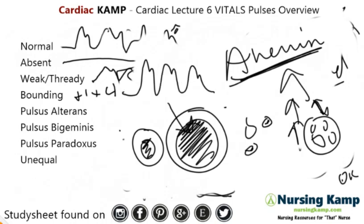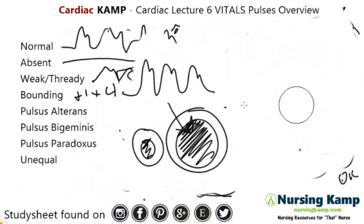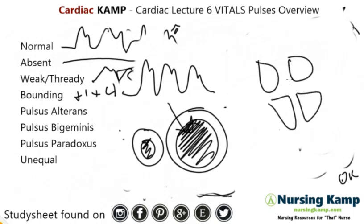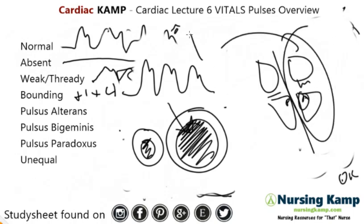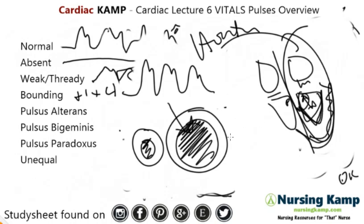Another cause of a bounding pulse is aortic regurge. As covered in a previous lecture on right-sided versus left-sided heart, the aortic valve is on the left side. Aortic regurge over time means blood is regurging back into the vessel, which becomes problematic and produces this bounding pulse. It might also just be related to aging and changes in the vasculature.